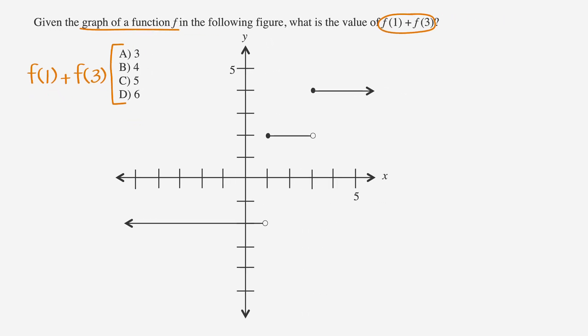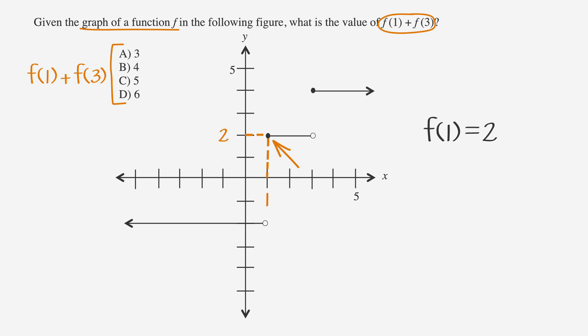Let's start by finding the value of f(1). Notice the shaded and unshaded circles on the graph when x equals 1. An open circle indicates that the point isn't part of the function, so we'll ignore the unshaded circle and look at the shaded circle. When x equals 1, y equals 2 — so f(1) = 2.